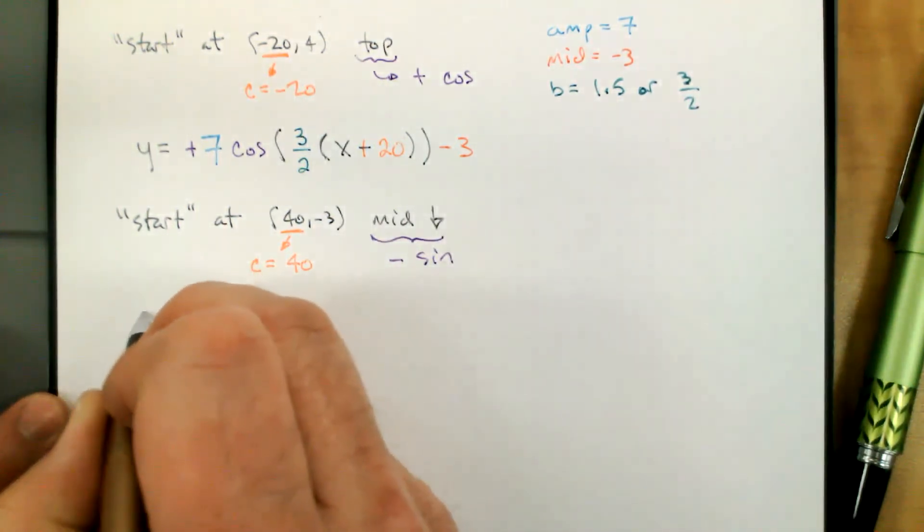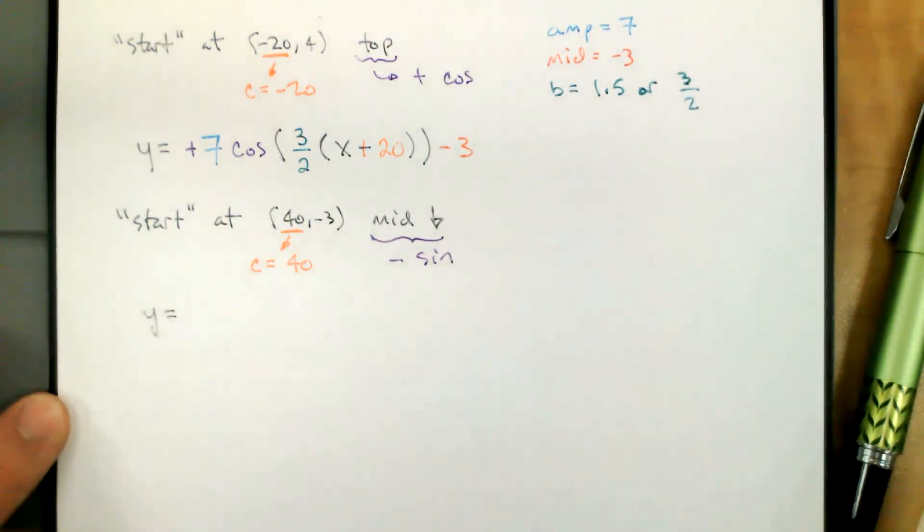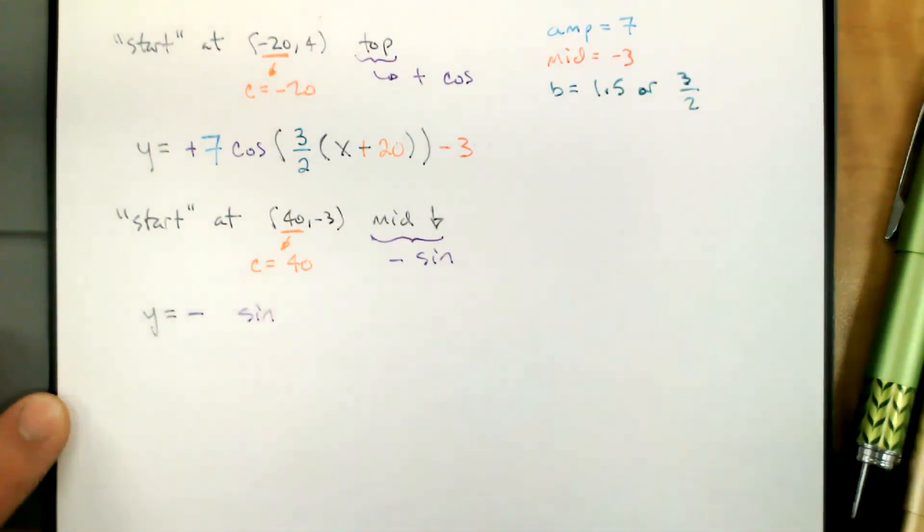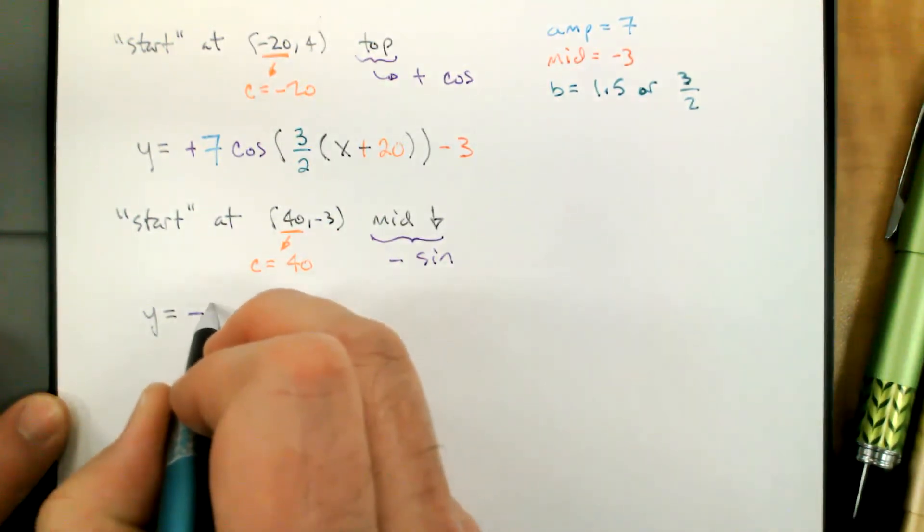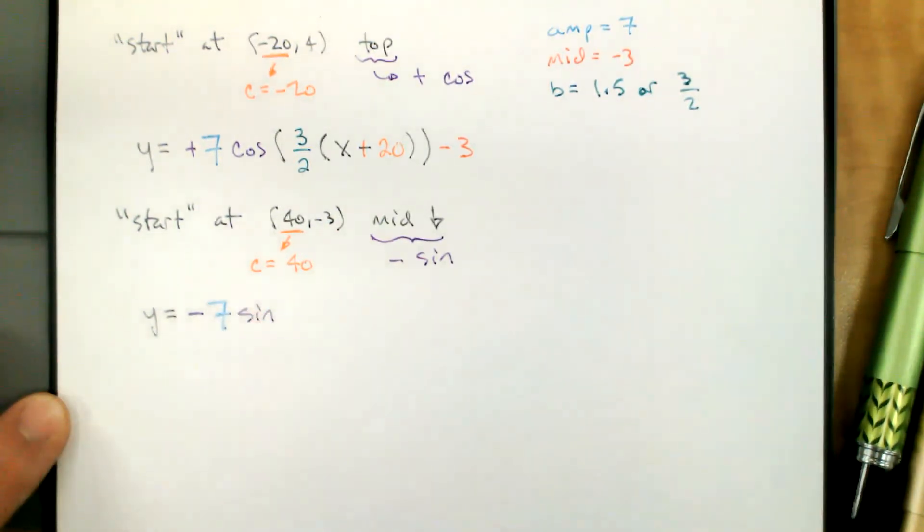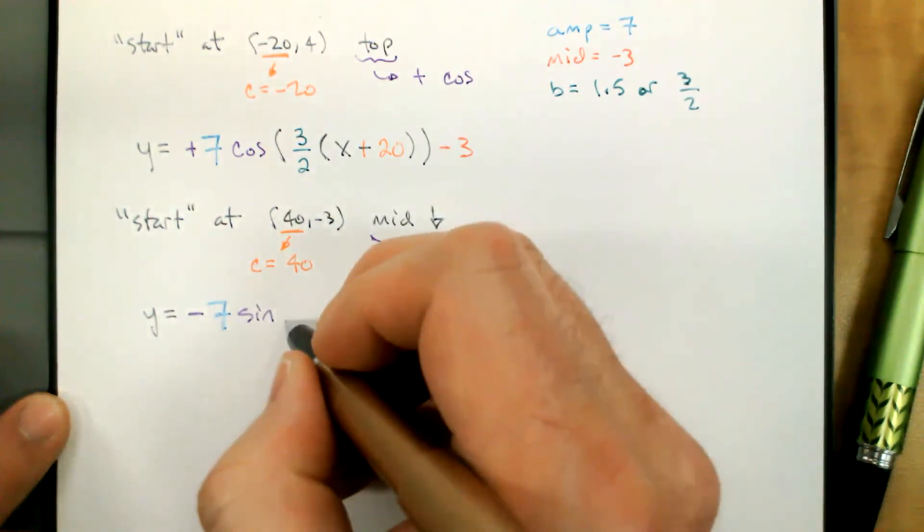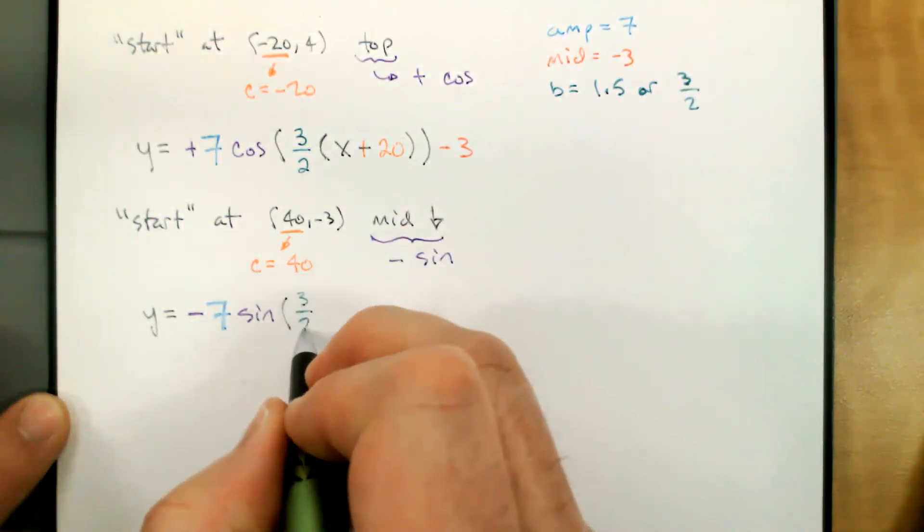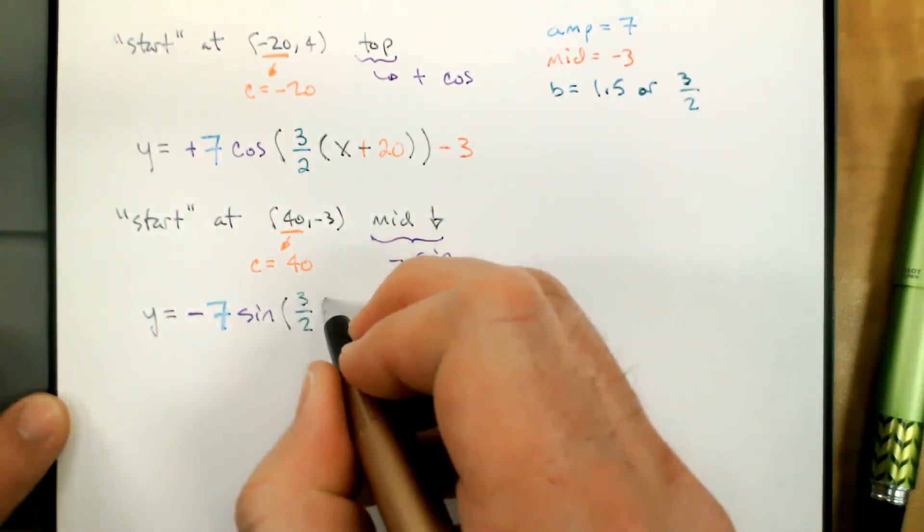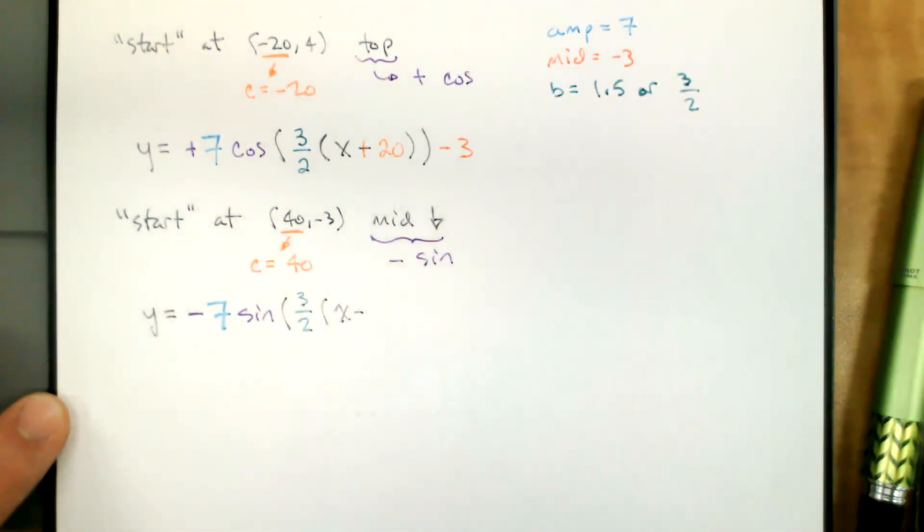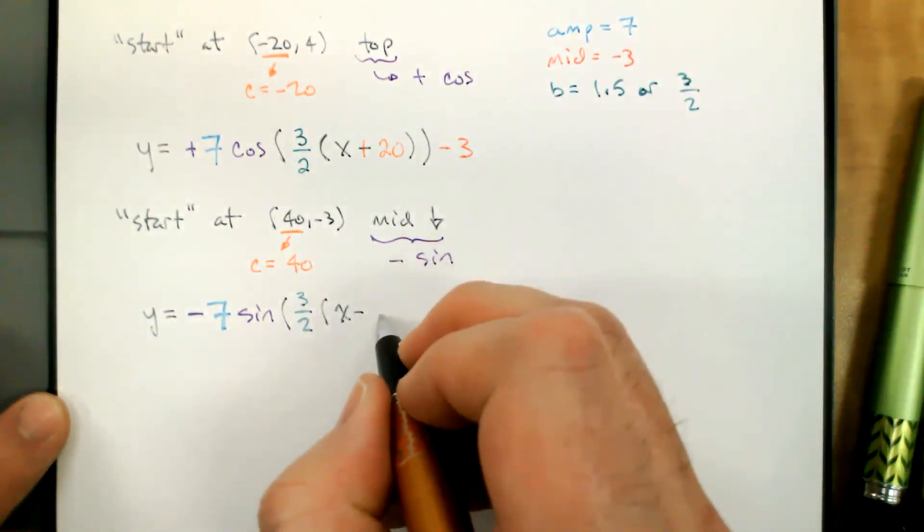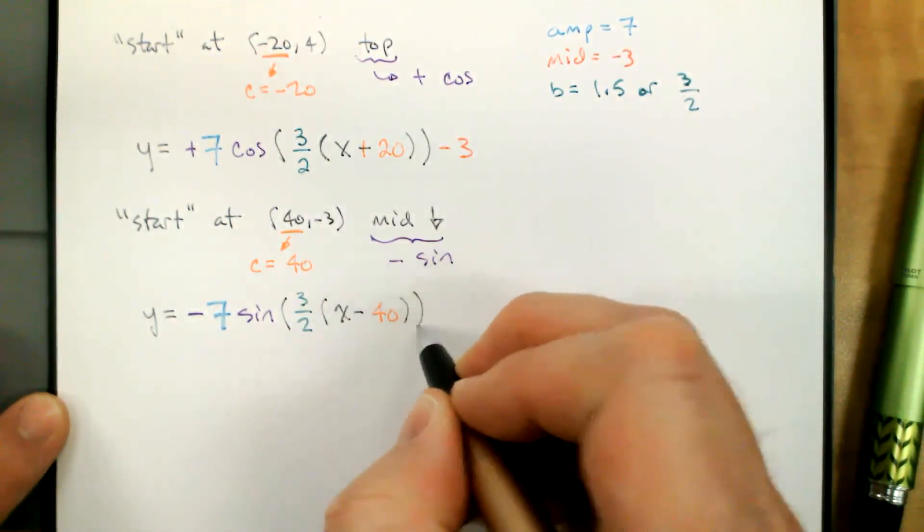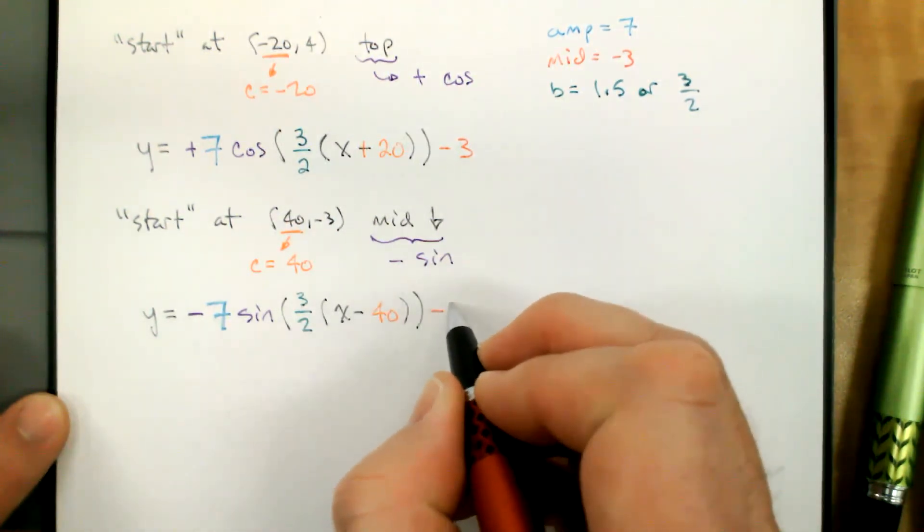So our equation in this case, we're using negative sine. Our coefficient of sine is seven for the amplitude. The coefficient of x is three halves to give us a period of 240. We say x minus our horizontal shift, which is 40. And our middle is still negative three.